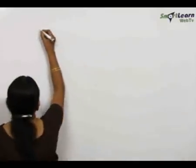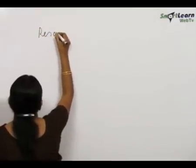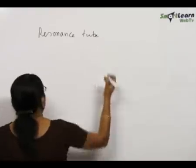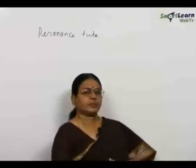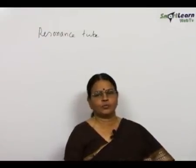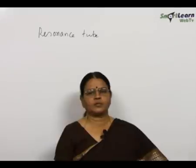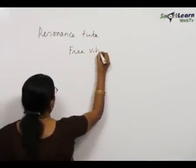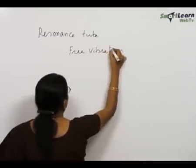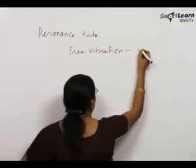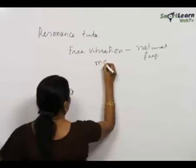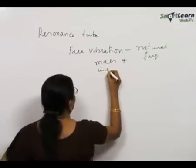We will discuss the resonance column or resonance tube apparatus. What is resonance? We know about free vibration, forced vibration, and resonance. Free vibration means any body capable of vibrating, if set into vibration, will vibrate with a natural frequency, which depends on the mass and inertia of the body.